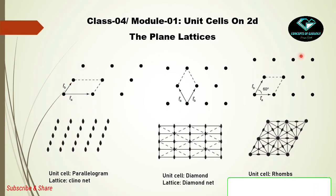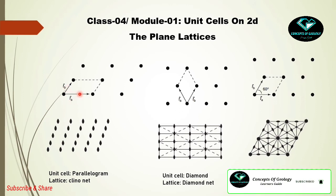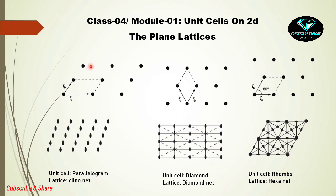Now let's find the symmetries present in each lattice. In the clinonet, ta and tb are not equal and the angle is general, so only a two-fold rotational axis is present at the midpoint between two lattice points — because joining them forms a straight line. In the diamond net, ta and tb are equal but the angle is general; again a two-fold rotational axis is present at the midpoint of the line joining two lattice points.